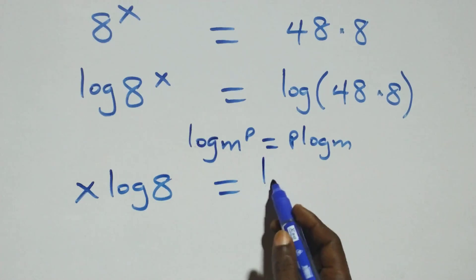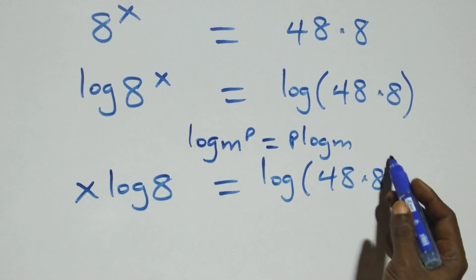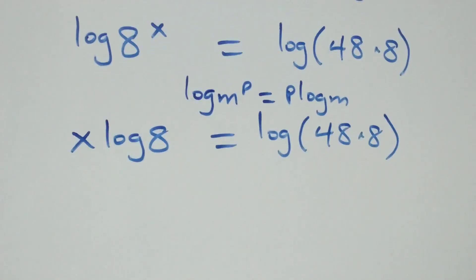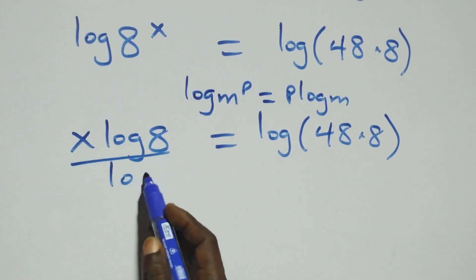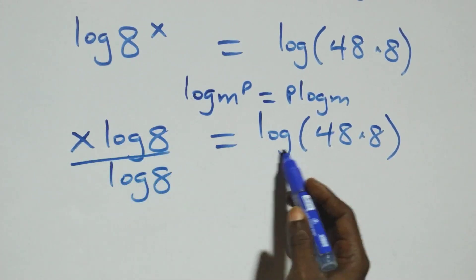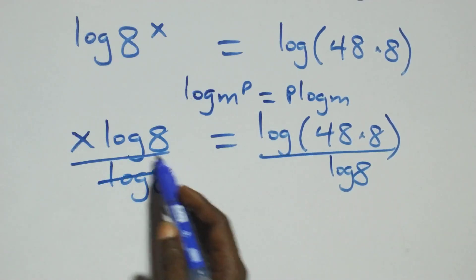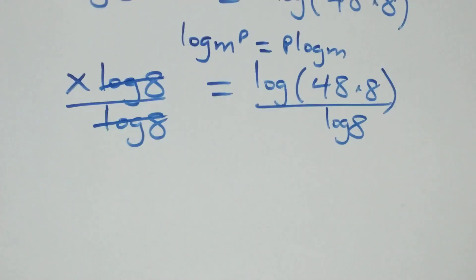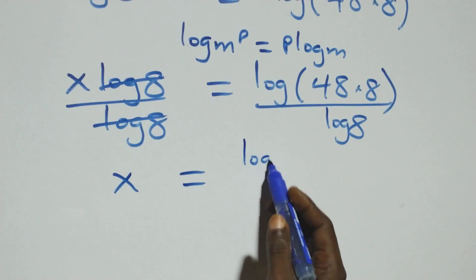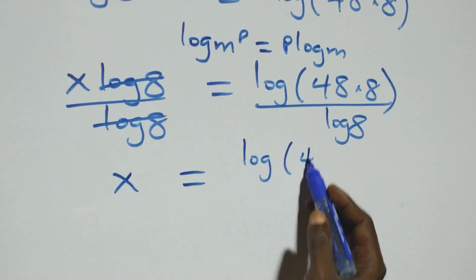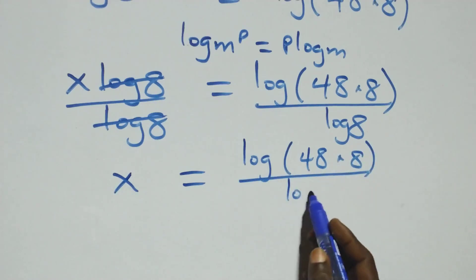So x log 8 equals log of 48 times 8. In the next step we divide both sides by log 8. Log 8 cancels on the left, and we have x equals log of 48 times 8 over log 8.